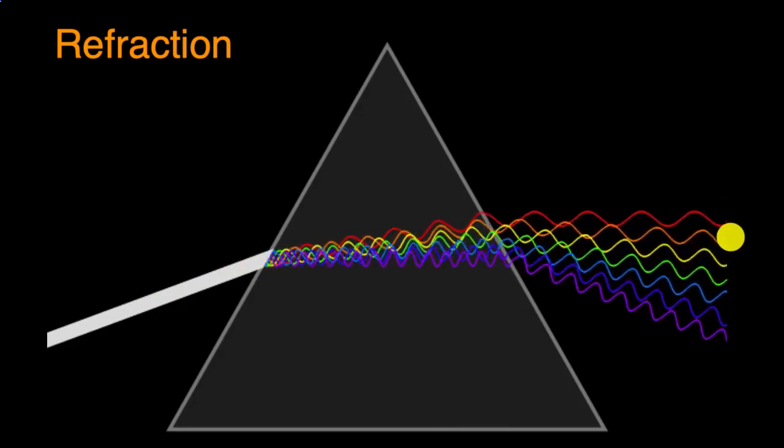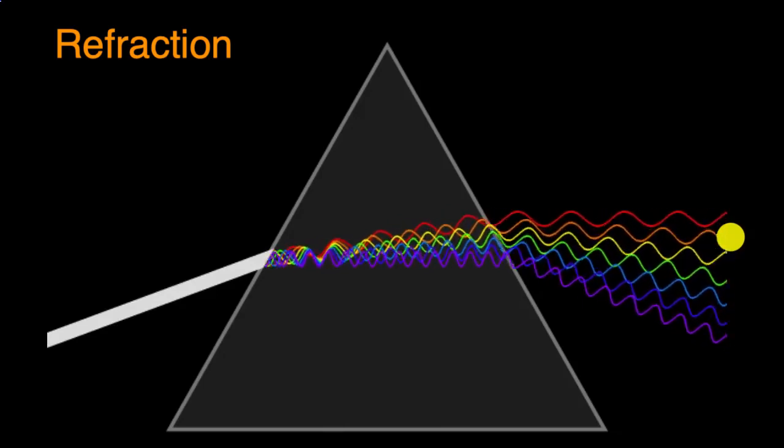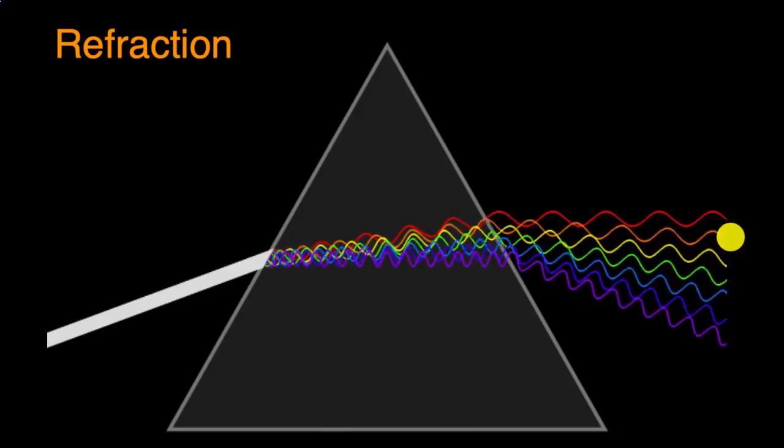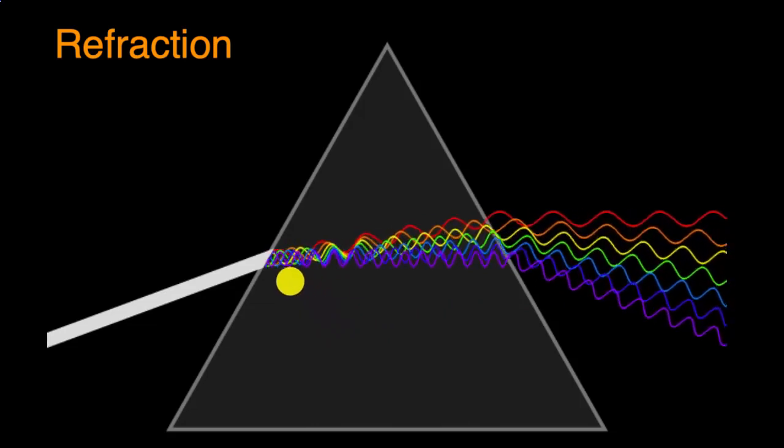And that's actually how rainbows are formed. A bunch of water particles in the air refract light exactly like this.